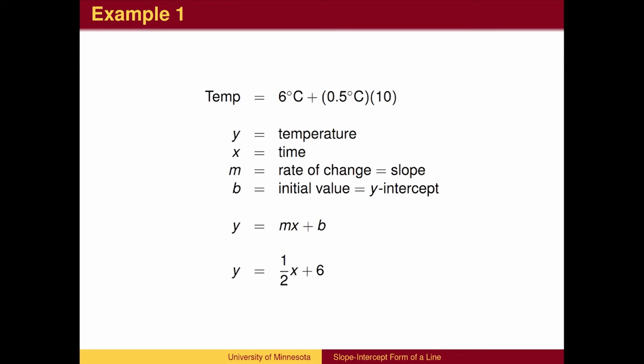In mathematical notation, we often use y as the dependent variable, the quantity we are interested in measuring, and x as the independent variable. In this case, we will let y stand for the temperature and x for time. We need to be given a rate of change of y with respect to x, called the slope, which we denote by the letter m.